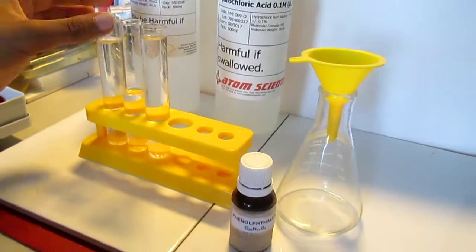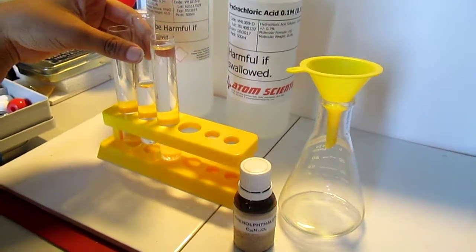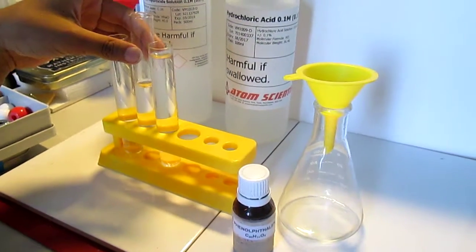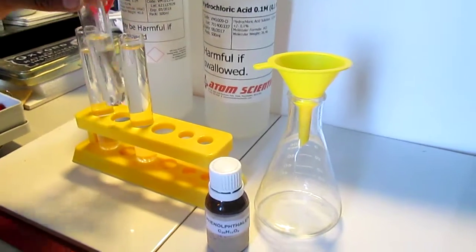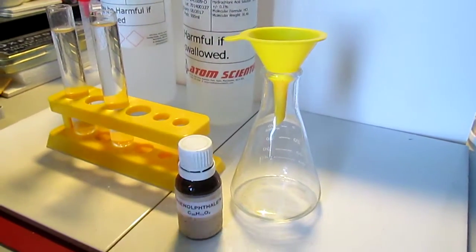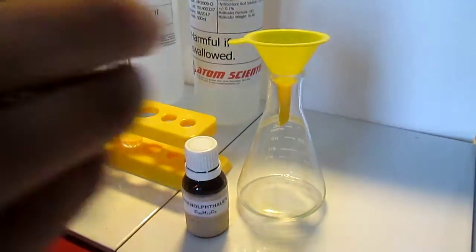You first pour the sodium hydroxide into a conical flask. You can see that it is a clear colorless solution.